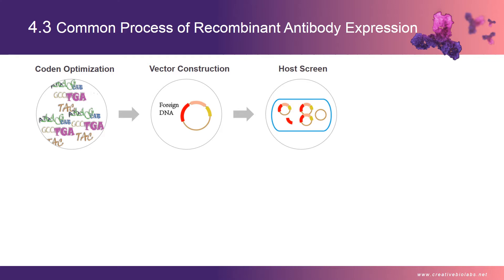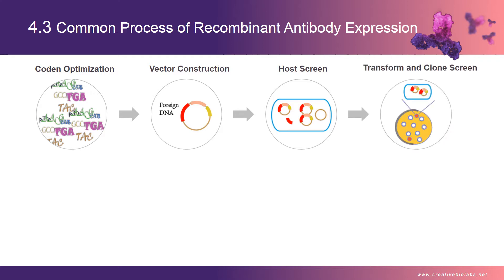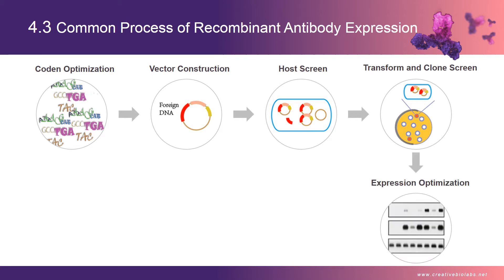Step 3: select suitable expression hosts based on sequence and protein character, then transform the recombinant plasmid into the host. Step 4: screen positive clones with screening markers. Step 5: optimize expression conditions, such as temperature, pH, or adding some biomolecules to promote expression.